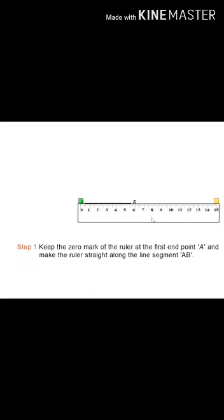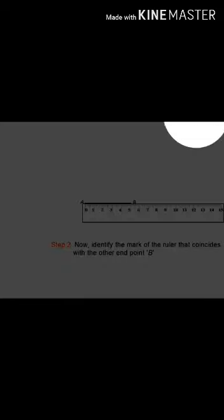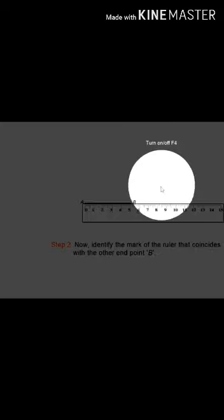The zero mark on the scale is at one end, point A of the line segment. We now read the mark on the scale which is at the other end, point B of the line segment.